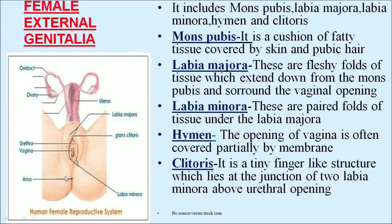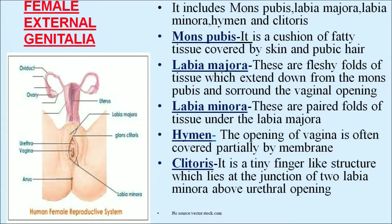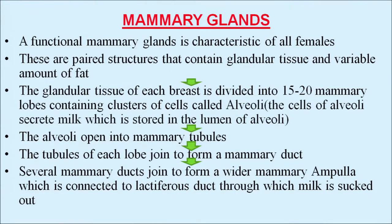Female external genitalia includes mons pubis, labia majora, labia minora, hymen, and clitoris. The mons pubis is a cushion of fatty tissue covered by skin and pubic hair. The labia majora are fleshy folds of tissue extending down from the mons pubis surrounding the vaginal opening. The labia minora are paired folds of tissue under the labia majora. The hymen is a membrane that often partially covers the opening of the vagina. The clitoris is a tiny finger-like structure at the junction of the two labia minora above the urethral opening.